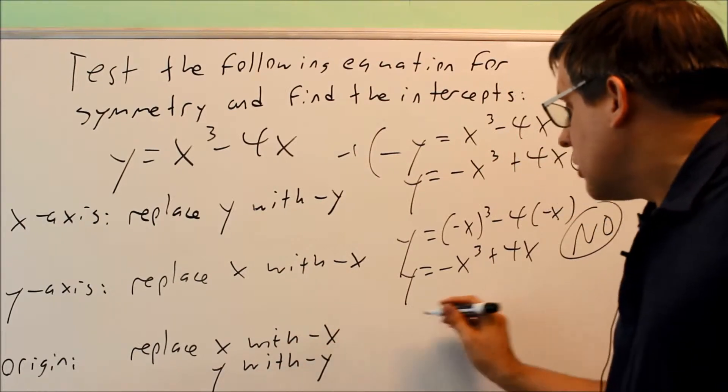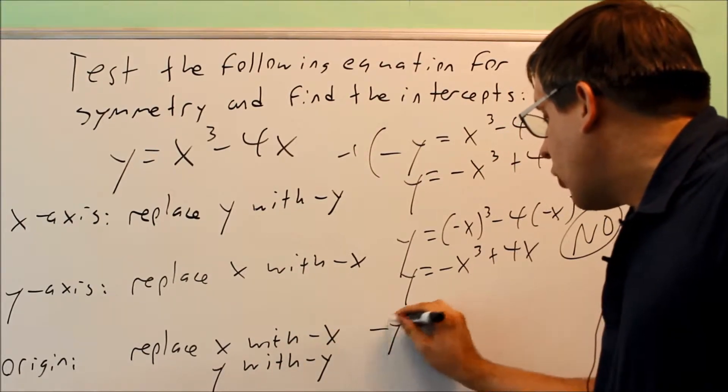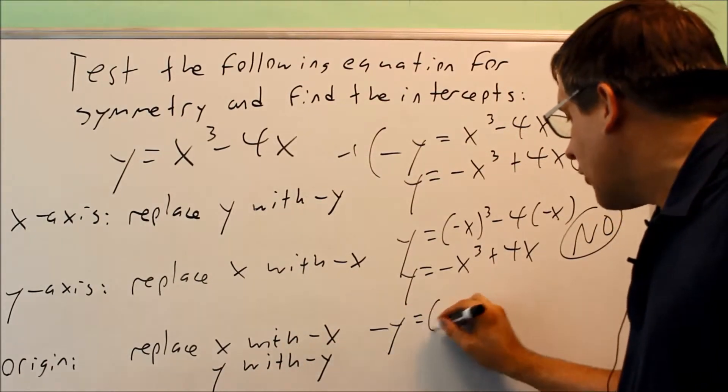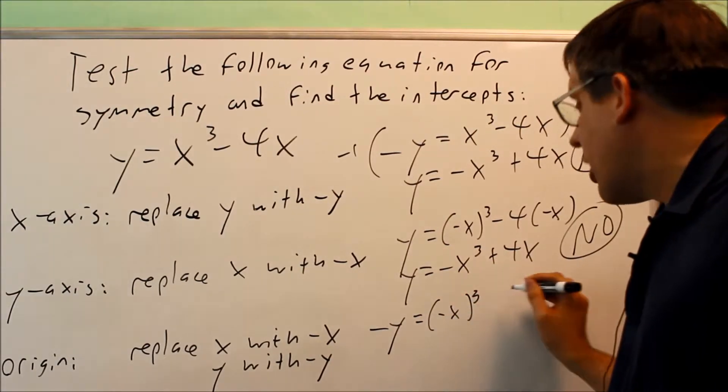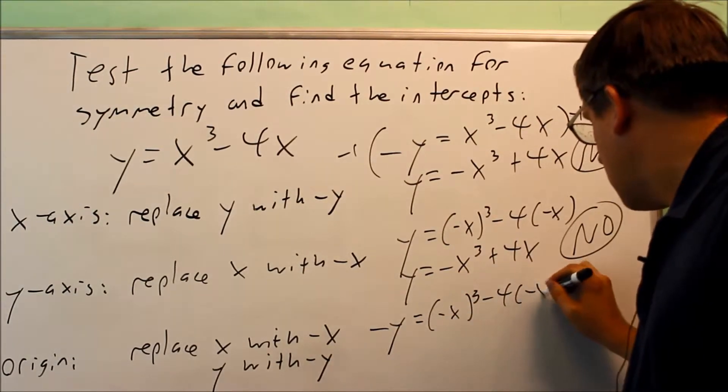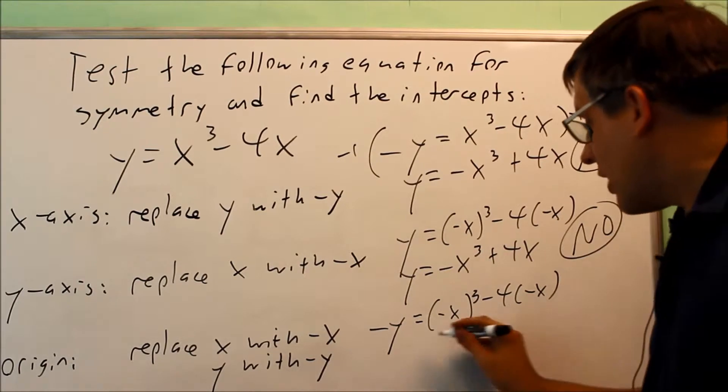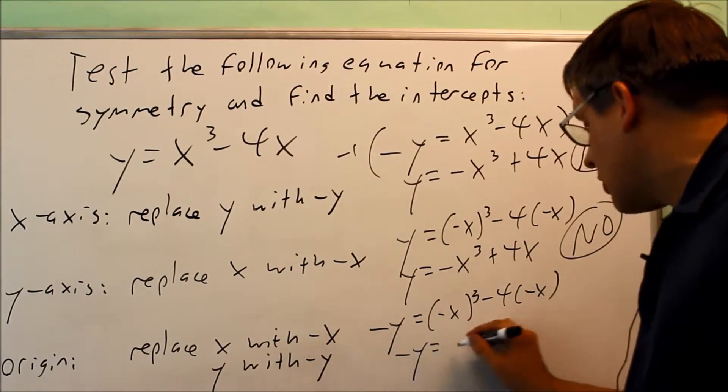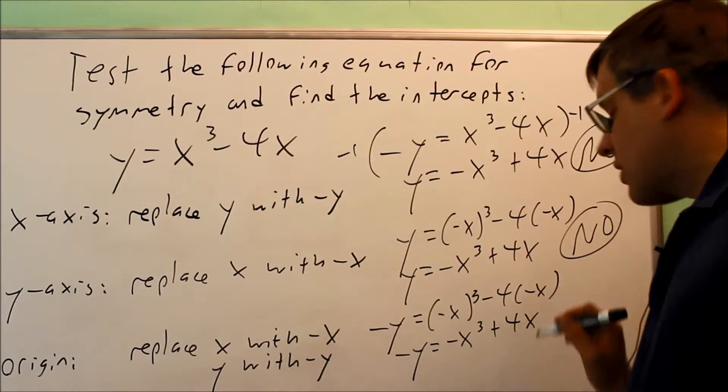We're going to do both of these. I'm going to put in negative y for y and a negative x for x. So when I simplify that, I get negative y equals negative x cubed plus 4x.